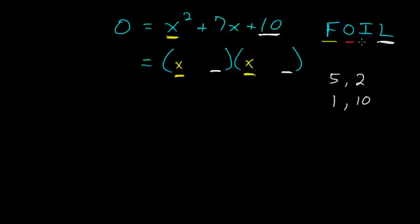And then the outer and inner terms will form 7x. And usually factoring is fairly complicated, but in our case, since each of the coefficients on x are 1, we really just need to figure out which combination of these factors of 10 adds up to give us this 7x. And in our case, it would be 5 and 2.